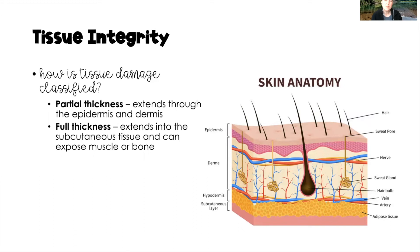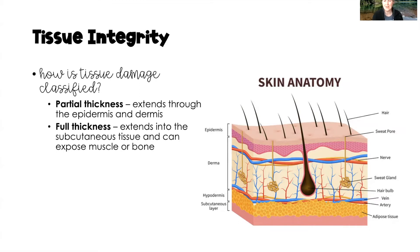When we think about classifying tissue integrity, there are two classifications. Partial thickness extends through the epidermis and dermis — the epidermis being the top layer of the skin, and then the dermis. Full thickness tissue integrity impairment extends all the way through the epidermis, all the way through the dermis, and down into the subcutaneous layer — so all the way through these layers of skin.